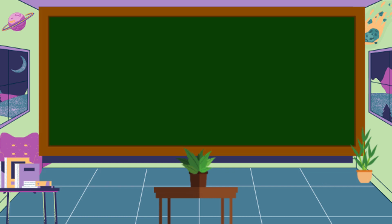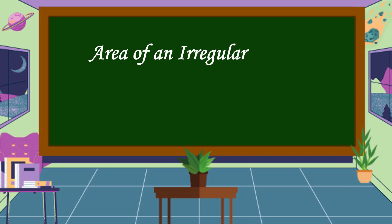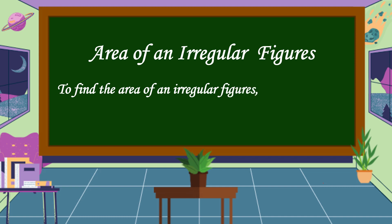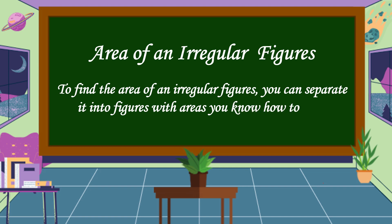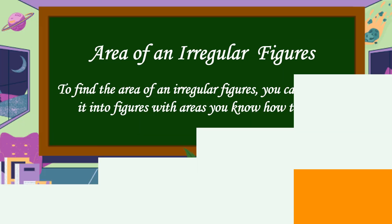Since you already know how to find the area of a square and the area of a rectangle, we're going to use this knowledge in finding the area of irregular figures. To find the area of an irregular figure, you can separate it into figures with areas you know how to find. Let's study this example.